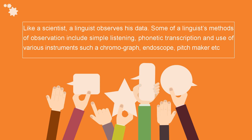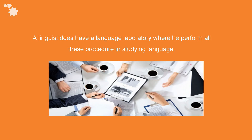Some of a linguist's methods of observation include simple listening, phonetic transcription, and use of various instruments such as a chromograph, endoscope, pitchmaker, etc. A linguist does have a language laboratory where he performs all these procedures in studying language.